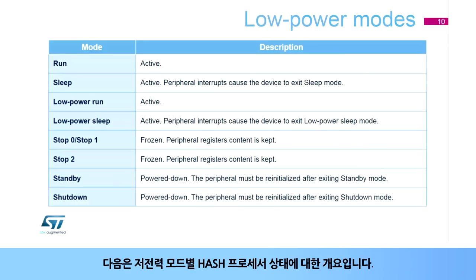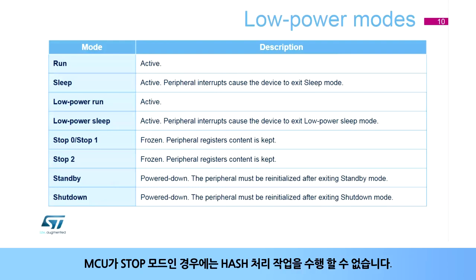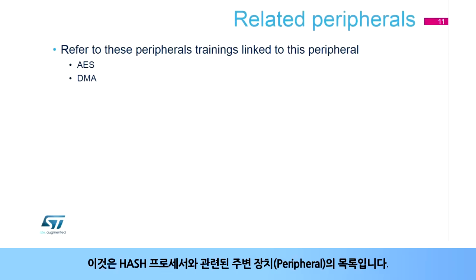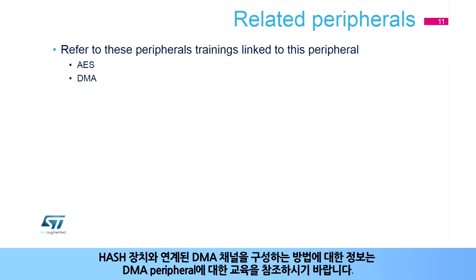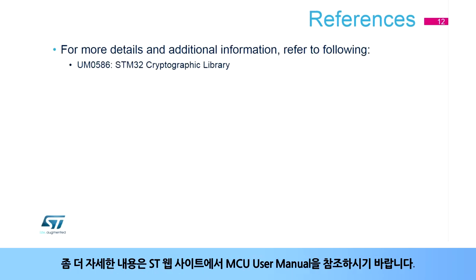Here is an overview of the status of the hash processor in each of the low power modes. Hash operations are not possible when the device is in stop mode. This is a list of peripherals related to the hash processor. Please refer to AES peripheral trainings if you want to know more about cryptographic functions. Refer to training on the DMA peripheral for information on how to configure the hash channel. For more details, please refer to this user manual available on our website.